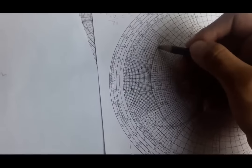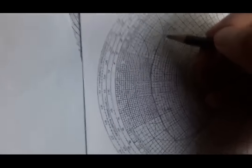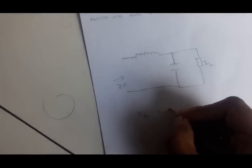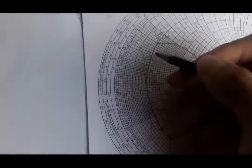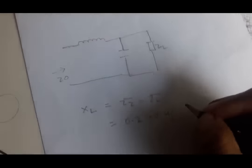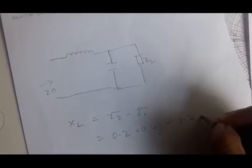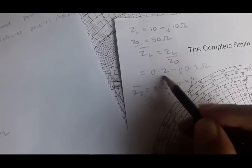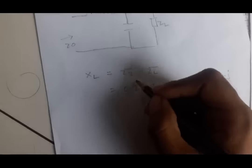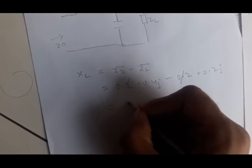To find the inductor value, the rule is final minus initial. Moving from Z̄L to Z̄2 on the resistance circle: XL = Z̄2 - Z̄L = (0.2 + j0.4) - (0.2 - j0.2) = j0.6. The real parts cancel and we are left with j0.6.